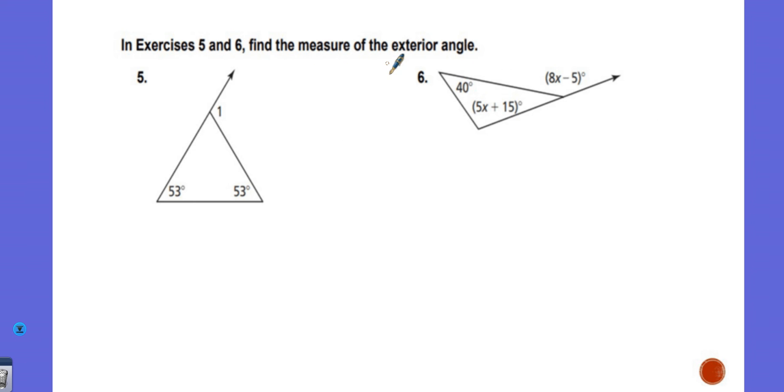So here, number five says find the measure of the exterior angle. This is the exterior angle here, and we know that this angle, I'm going to call it X. X should be equal to 53 plus 53, which is the sum of the two opposite angles, so that means X equals 106.